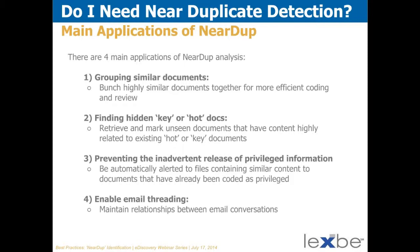The main applications of near-dupe are four. The first is grouping similar documents. When a document collection comes in for review, there are different ways to go through documents to determine responsive and privileged coding or other issue coding. Near-dupe can identify large groups of similar documents and put them together. For review, you can cut review time by taking those groups, looking at them once, and making a fairly quick determination of responsiveness, privilege, or other issue coding. You can quickly cut a document collection down by reviewing these big groups and then move on to documents that aren't in those groups.